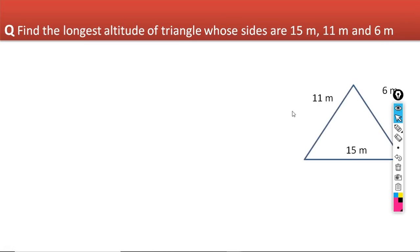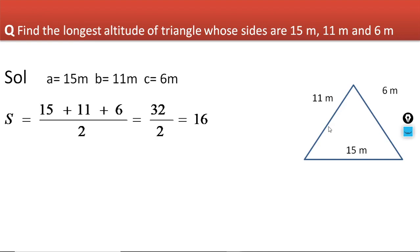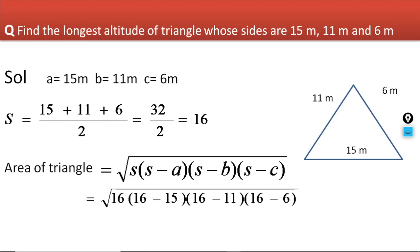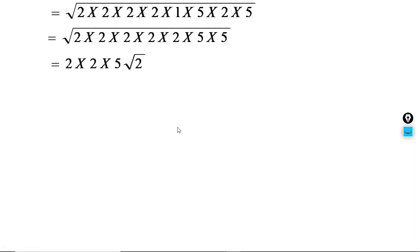We have our three sides as 6, 15 and 11. We find the semi-perimeter, which is 16. Then the area of our triangle is √(S × (S−A) × (S−B) × (S−C)). Substituting S = 16: √(16 × (16−15) × (16−11) × (16−6)) = √(16 × 1 × 5 × 10). After pairing, we get 20√2 square metres. That is the area of this triangle.